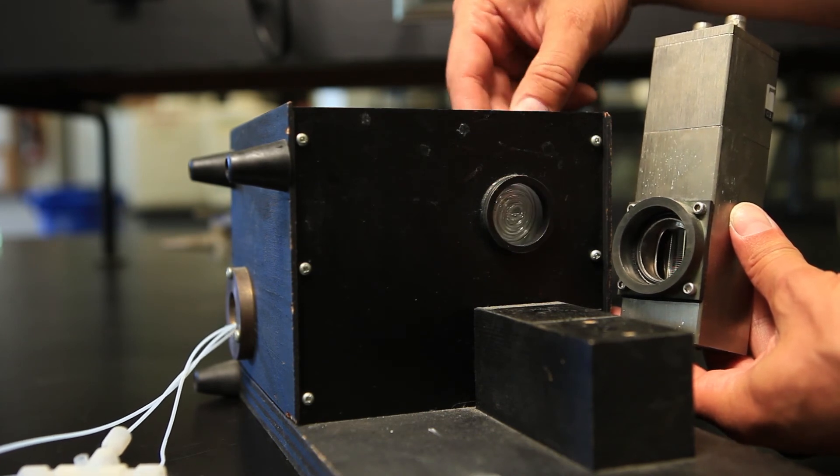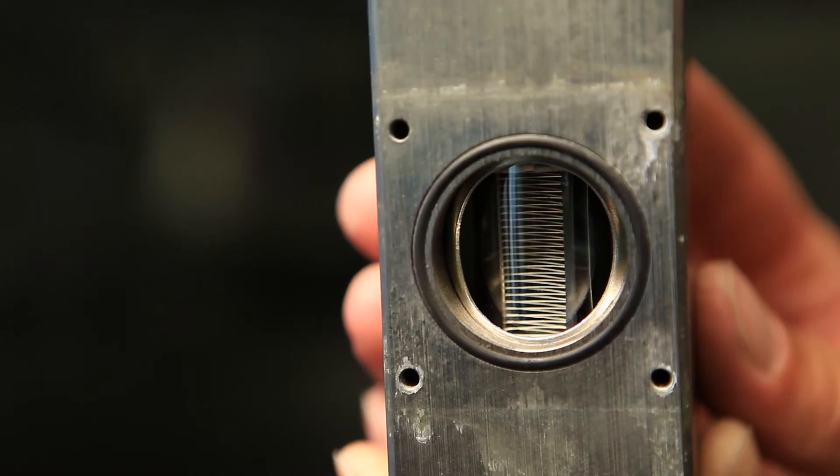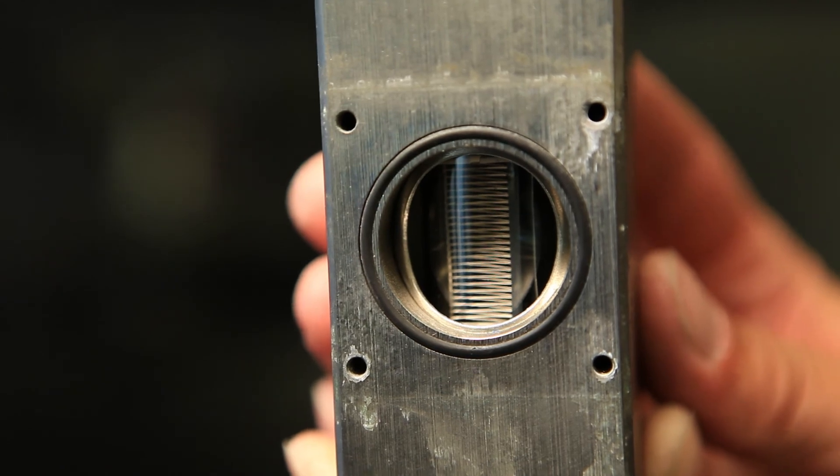The spiral coil is placed directly in front of the detector, to capture as many photons as possible. The detector in this setup is again a photomultiplier tube.